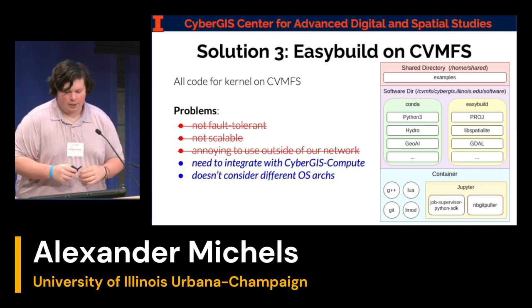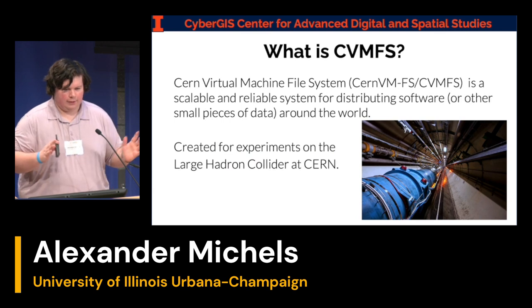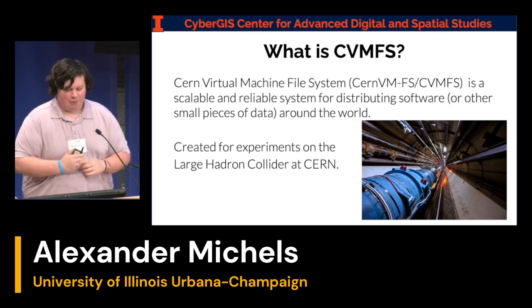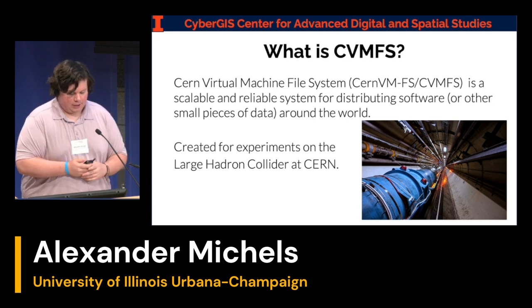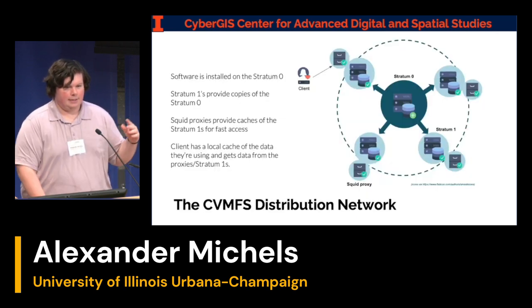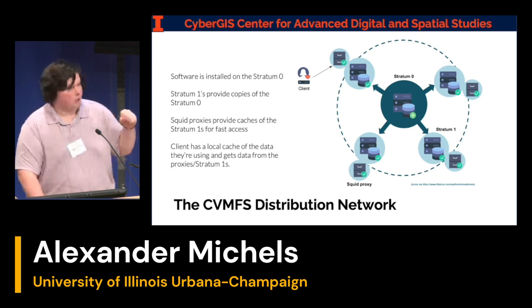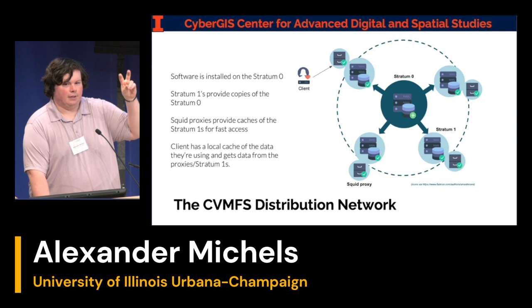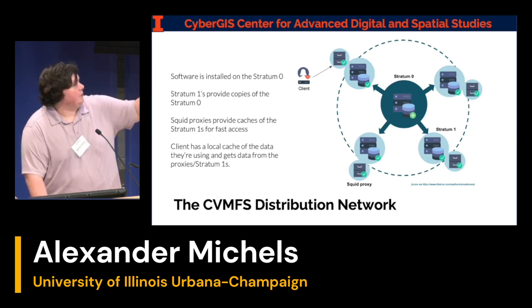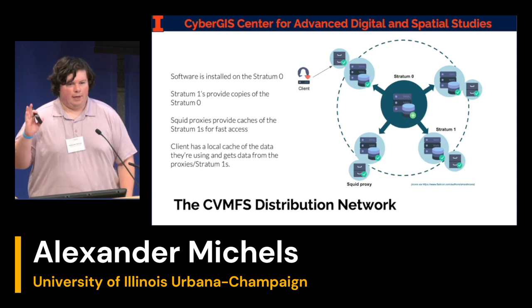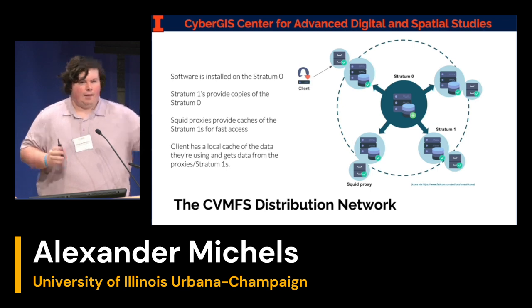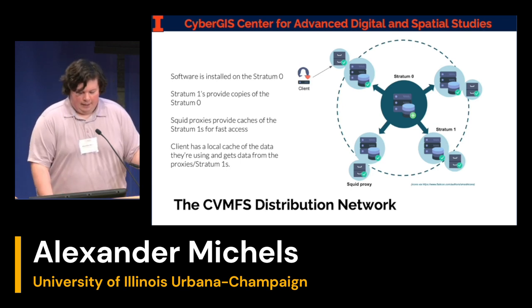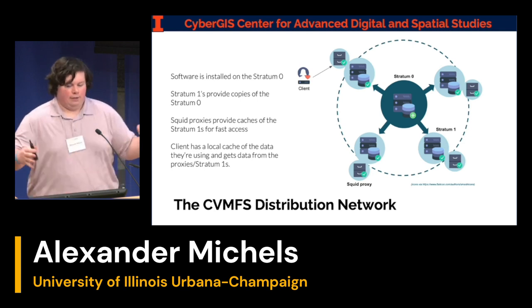We actually just had a paper accepted to Computation, Concurrency: Practice and Experience, coming out in the next week or two. But what is CVMFS? It's the CERN Virtual Machine File System — a scalable and reliable system for distributing software, created for the Large Hadron Collider at CERN. Instead of one central server, you have a stratum zero as the leader and read-only copies called stratum ones that you can place anywhere. We have our stratum zero and a read-only copy at Illinois, plus another copy on Anvil and another on Jetstream, and you can set up a proxy network to scale as needed.